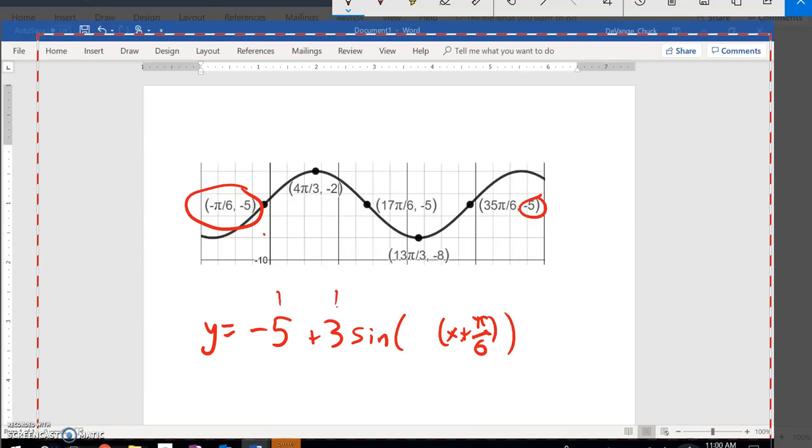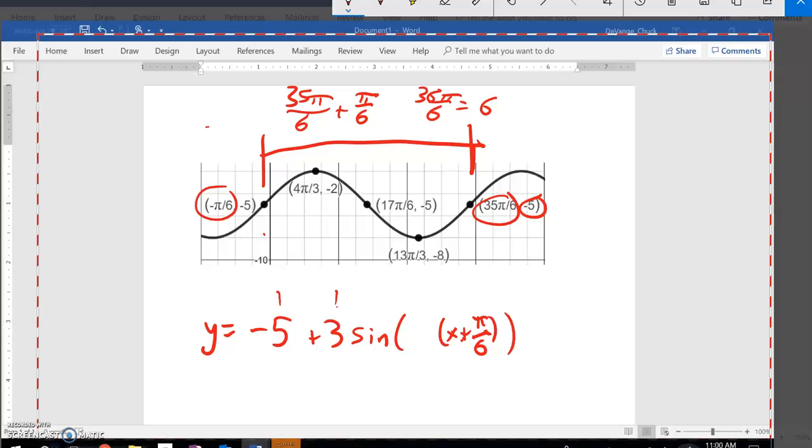And I just have to know the stretch, how long it's been stretched. So if I look from here to here, that's 35 pi over 6. And this is a negative pi over 6. So I could go minus it, but if I want to know how far apart they are, I'm just going to add that pi over 6, minus a negative pi over 6. And that would be 36 pi over 6, which is 6 pi.